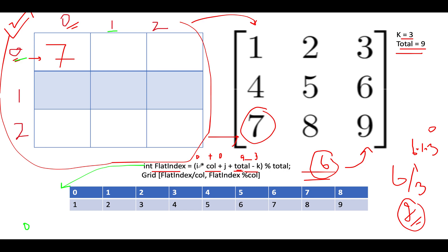So since i is 0, 0 into 3 is 0 plus 1, j is 1 plus total is 9 minus k which is 3. So what do you get? You get 6 plus 1. This gives you 7.